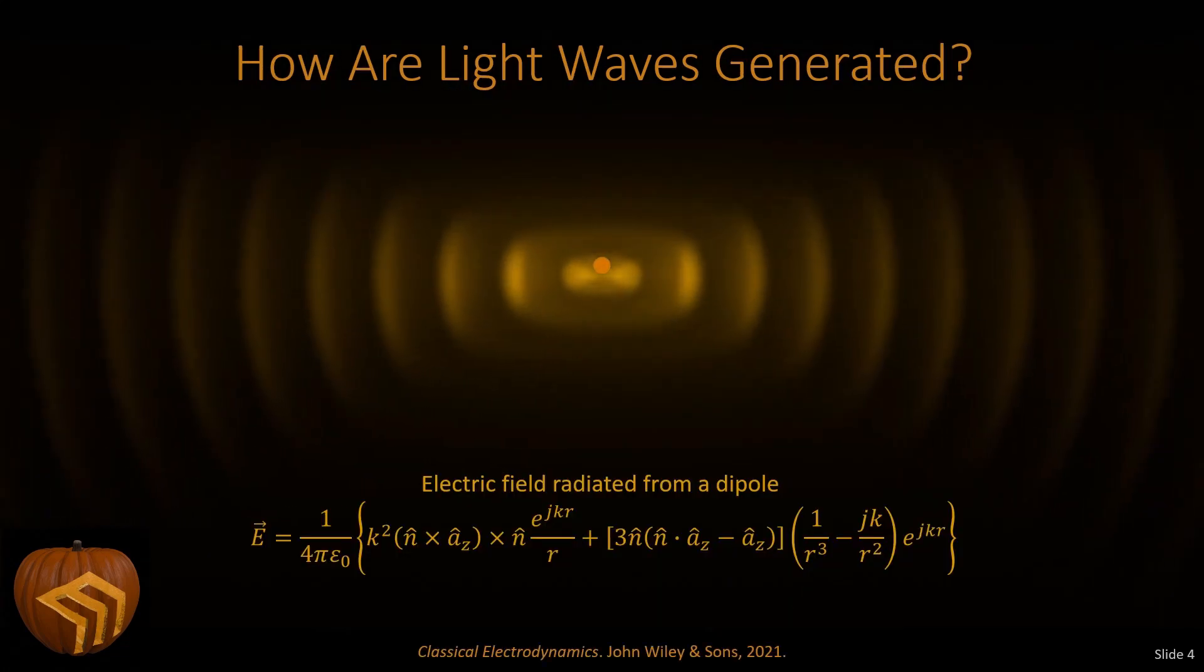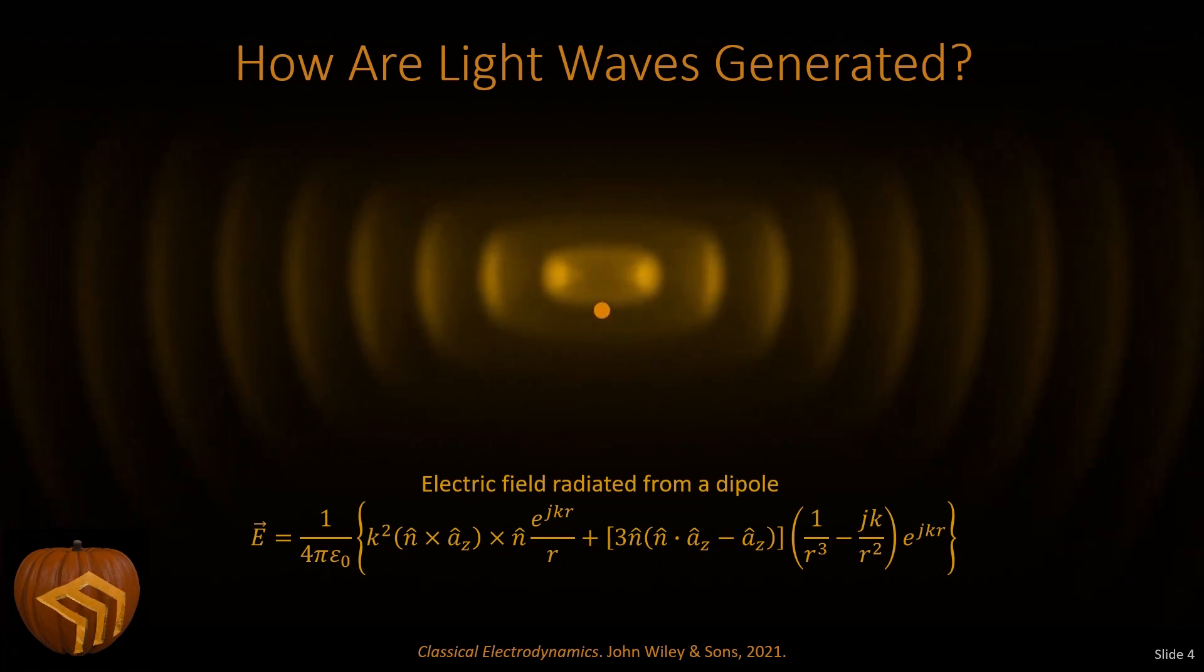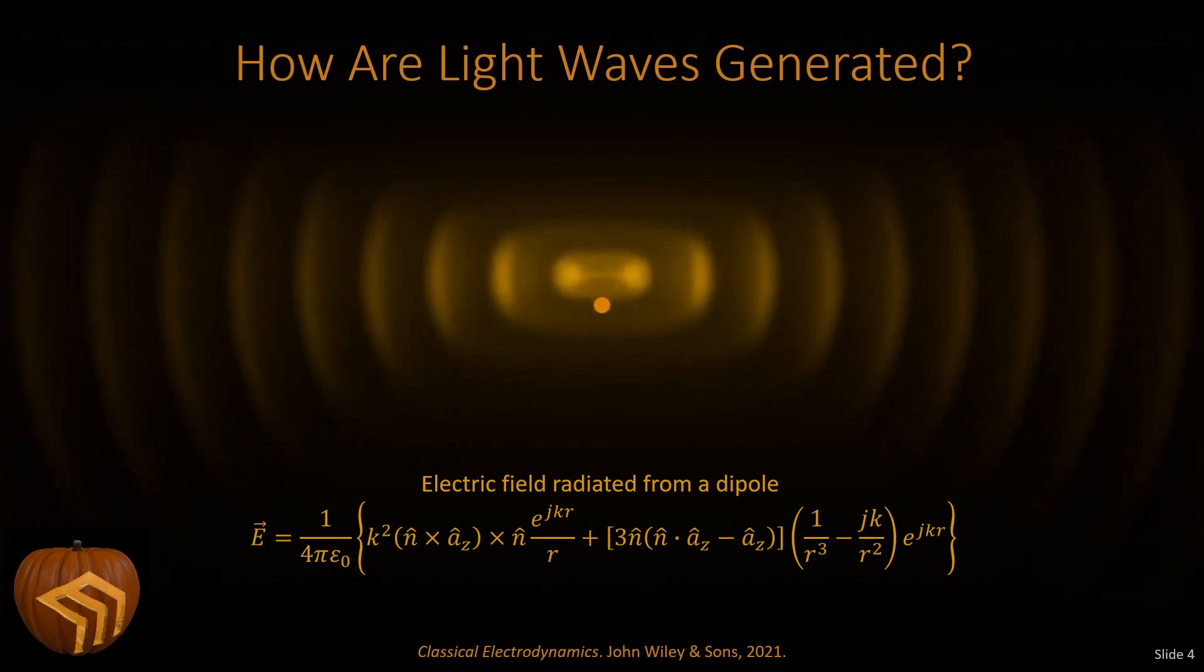Light is an electromagnetic wave. And all electromagnetic waves, whether they're radio waves or light or x-rays, they're all generated the same way, and that's by accelerating charge. If the charge is not moving, or even if it's moving at a constant speed, it will not radiate.